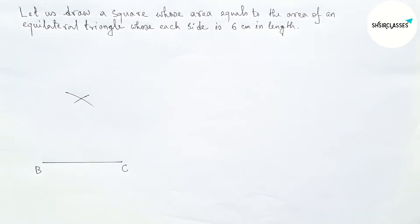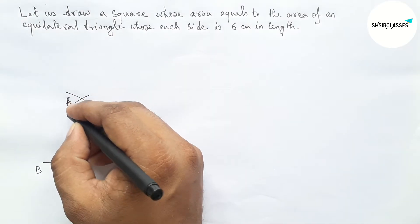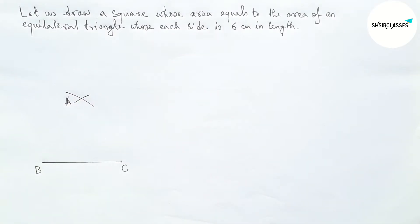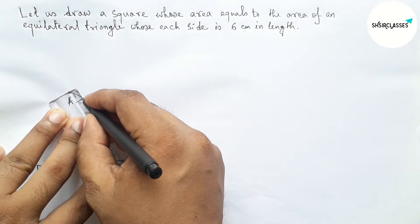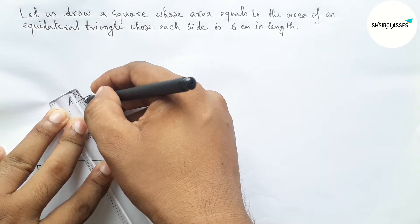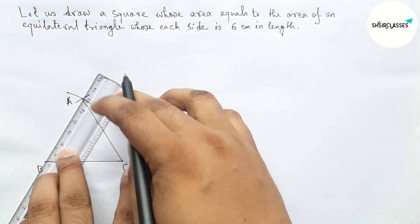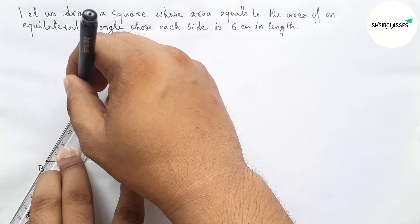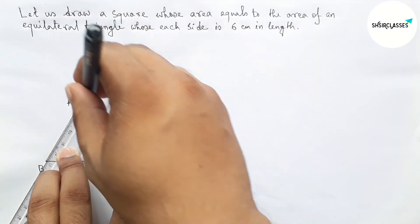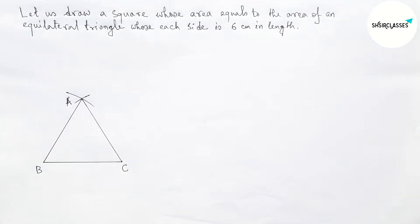Now taking point A here, then joining the side AC, then joining the side AB to complete our required equilateral triangle.